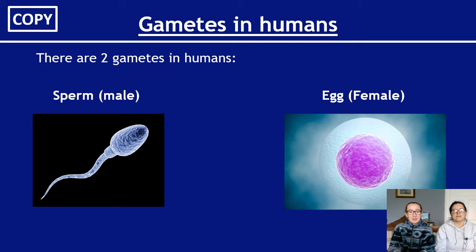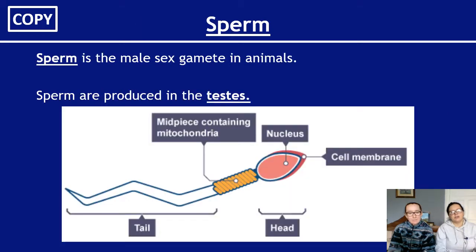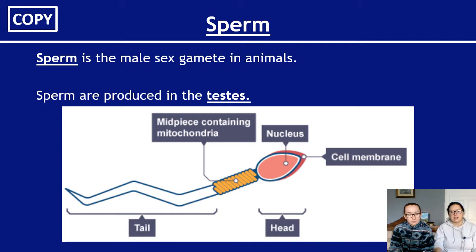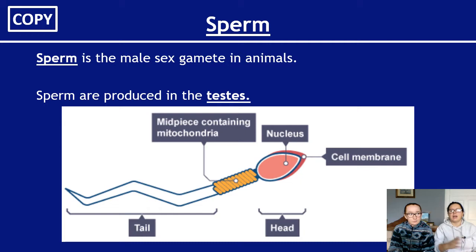Gametes are sex cells. In males the male gamete is the sperm; in females the female gamete is the egg. Sperm is the male sex gamete in animals and sperm are produced in the testes — an important fact they love to ask about. The sperm has a head containing the nucleus with the male DNA. It has a mid-piece with mitochondria doing aerobic respiration to provide lots of ATP so the tail has enough energy to move.